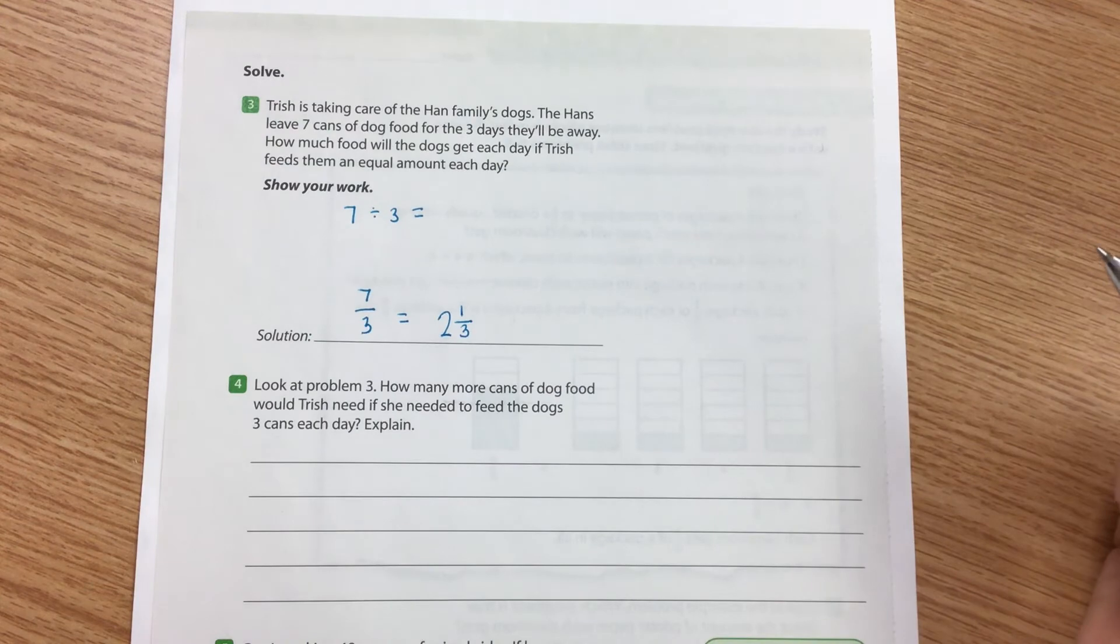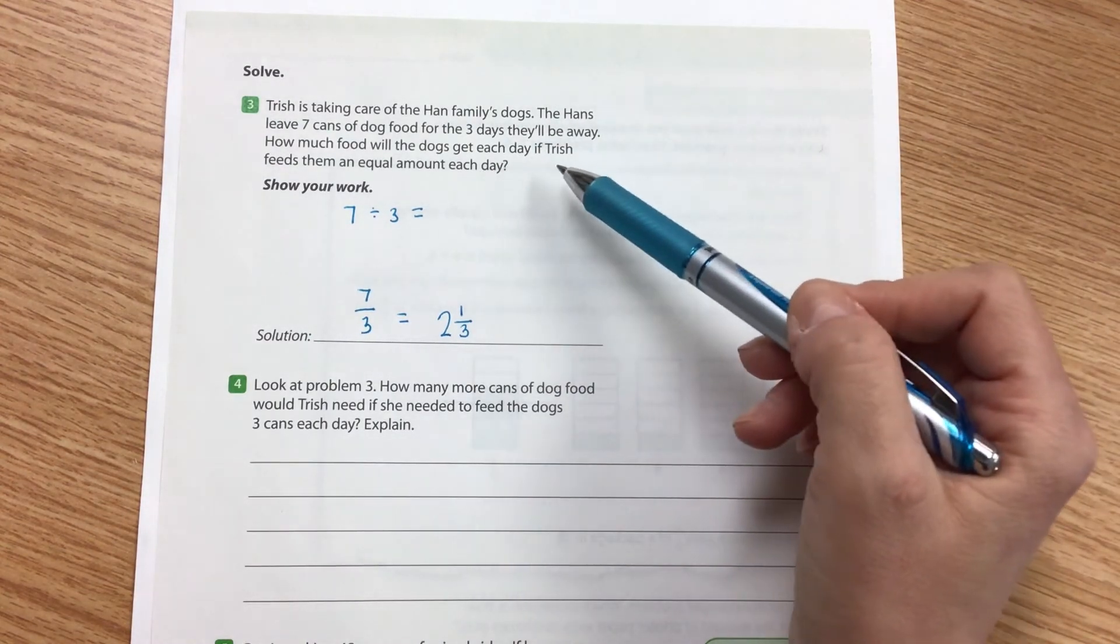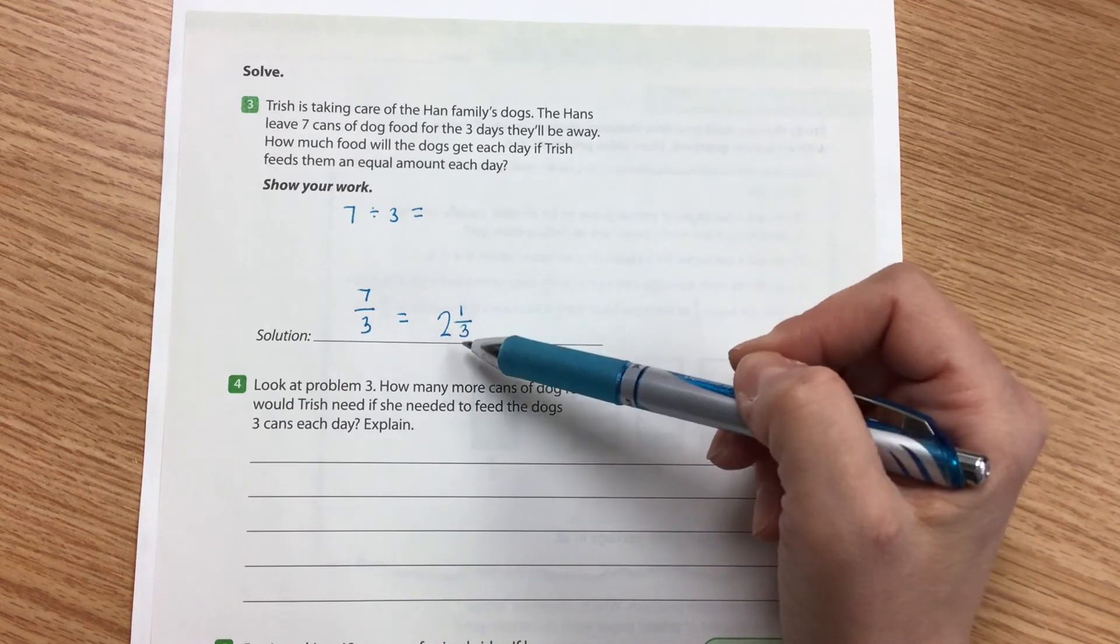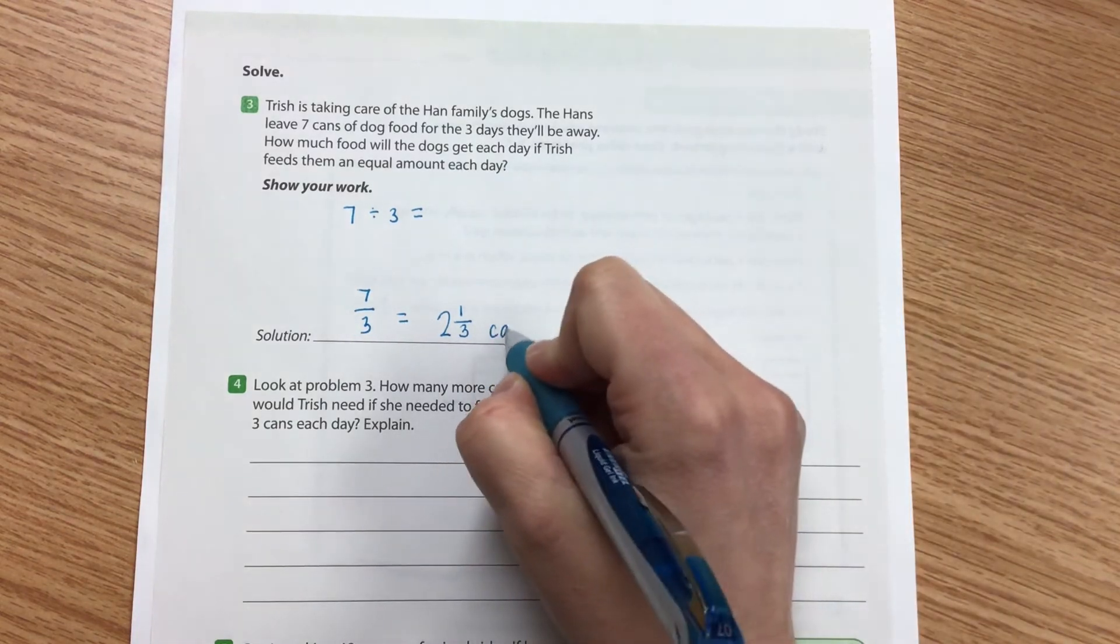So my answer, how much food will the dogs get each day if Trish feeds them an equal amount each day? Two and one-third cans of dog food.